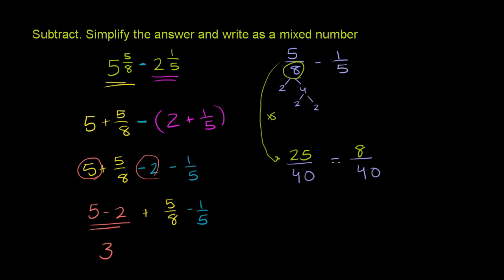So now we have 25 40ths minus 8 40ths, which would be equal to, we're going to have 40 as the denominator. 25 minus 8 is 17. So 5 eighths minus 1 fifth, which is the same thing as 25 40ths minus 8 40ths, is equal to 17 40ths.